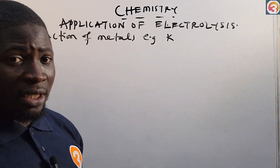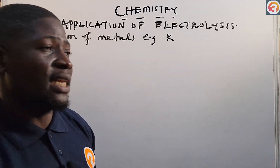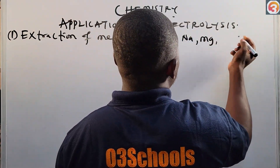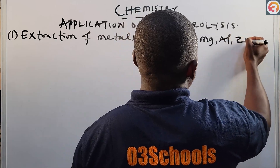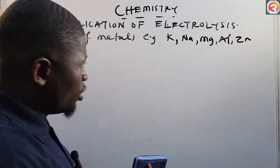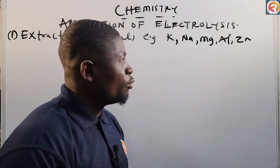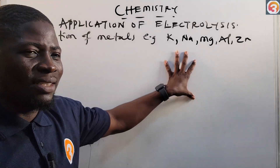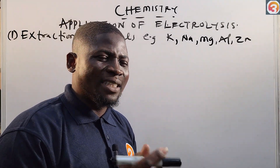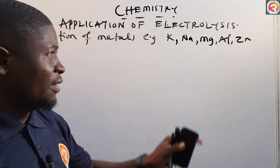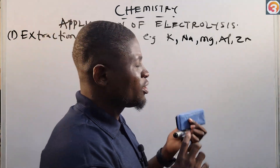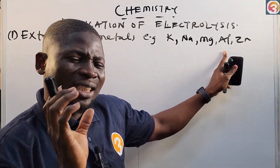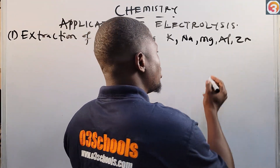Applications of electrolysis include the extraction of metals such as potassium, sodium, magnesium, aluminium, and zinc. This is because these metals form very stable compounds that are difficult to be reduced by simple reducing agents like carbon monoxide.